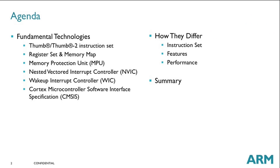The agenda for today's webinar is fairly straightforward. The first part will consist of aspects of the Cortex-M family that are common among all its members, starting with some history on the Thumb and Thumb-2 instruction set. Then we'll look at the register set and memory map, the memory protection unit, the nested vectored interrupt controller, the wake-up interrupt controller, and the Cortex Microcontroller Software Interface Specification. The second half will cover differences, including instruction set support, core feature sets, and performance on standard benchmarks.